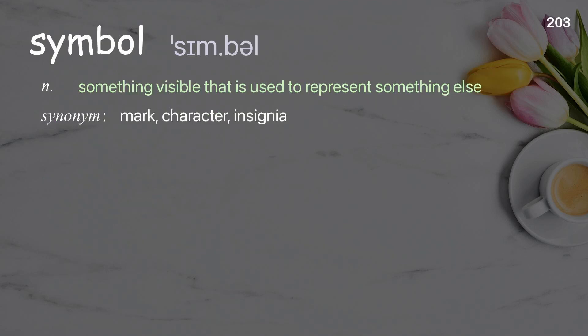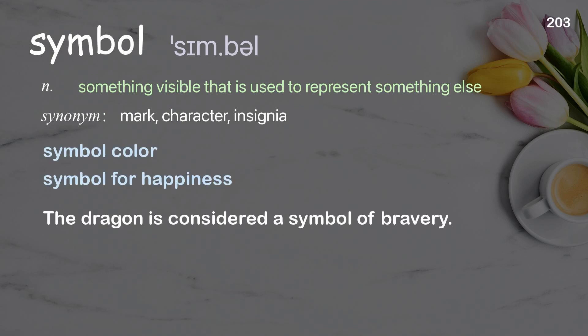Symbol: something visible that is used to represent something else. Examples: symbol color, symbol for happiness. The dragon is considered a symbol of bravery.